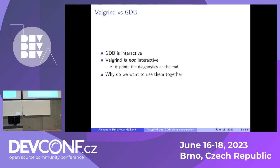When Valgrind has any problem with your code — for example, an invalid write happens, or there is a conditional jump dependent on an uninitialized value, or anything like that — Valgrind will stop GDB. It will stop running your program. At that point, you can send some commands to Valgrind. You can ask Valgrind whether a variable is defined or not, for example.